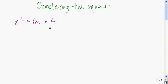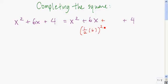The first thing I like to do is rewrite it and put the constant off to the side. Next, we're going to take half of this number, square it, and then add it right here. Half of 6 is 3, so this becomes 3 squared, and 3 squared is 9. So we take half of this number, square it, and add it.